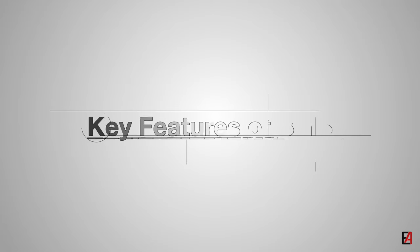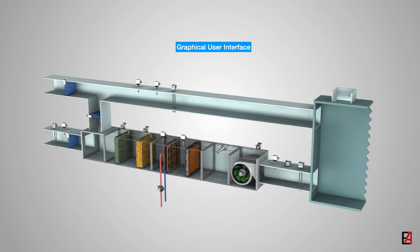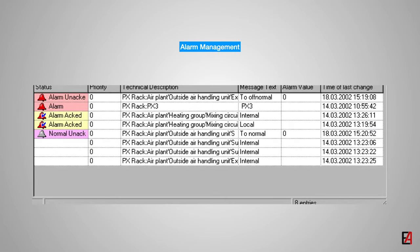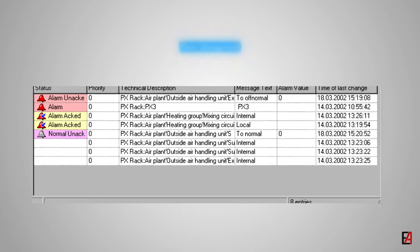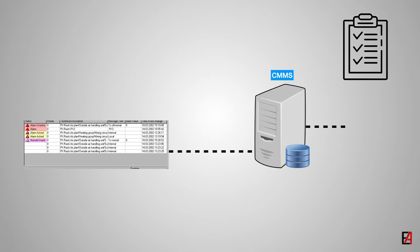BMS has many features which make it an important system in building comfort and safety applications. First is the graphical user interface. All BMS systems provide a graphical user interface which represents a 2D or 3D view of the equipment. It also displays the sensors installed in the equipment. The next and most important feature of BMS is alarm management functionality. BMS provides a variety of alarm management functions. It is also possible for the BMS system to send alarm information to an external program such as maintenance management software to generate work orders based on alarm descriptions.